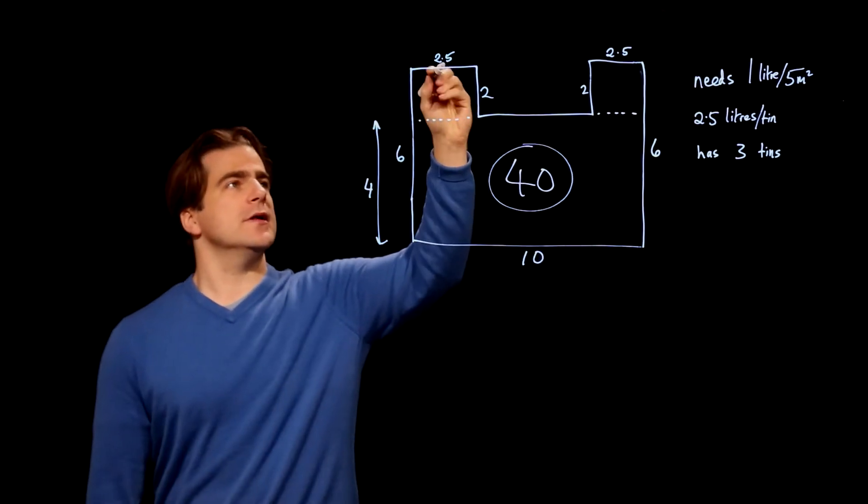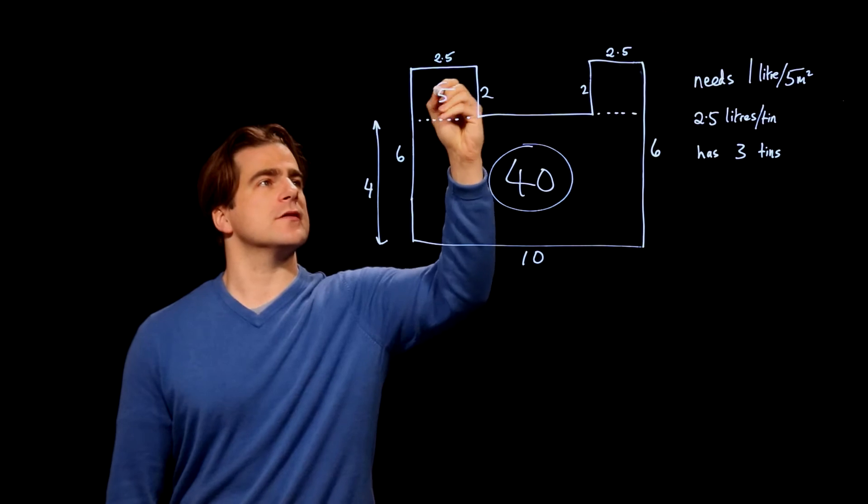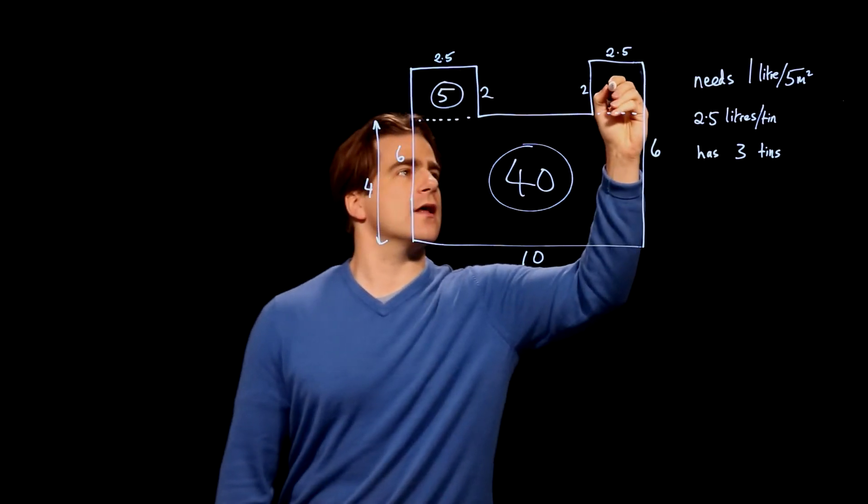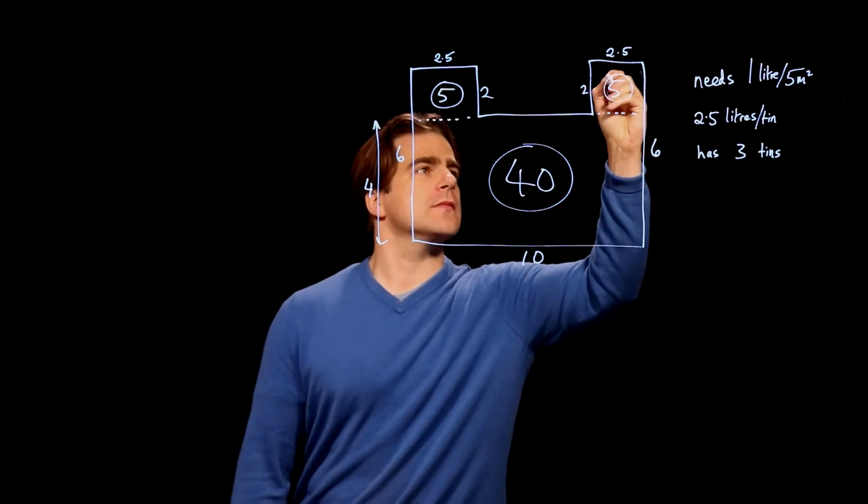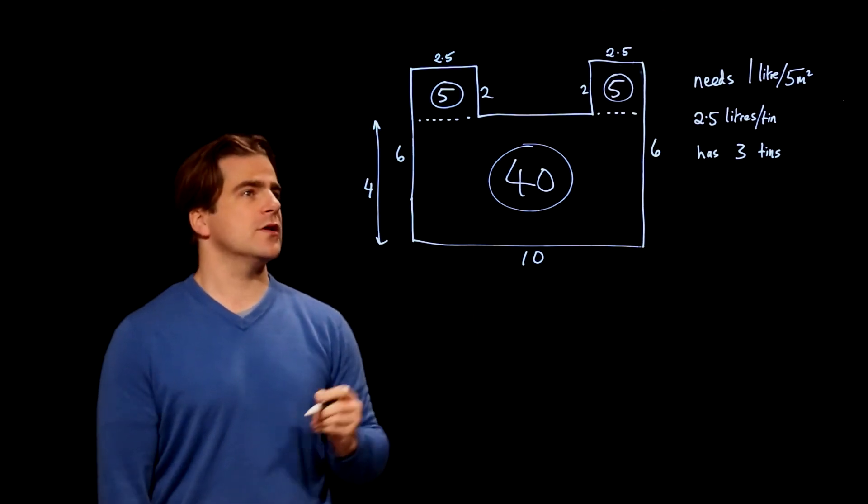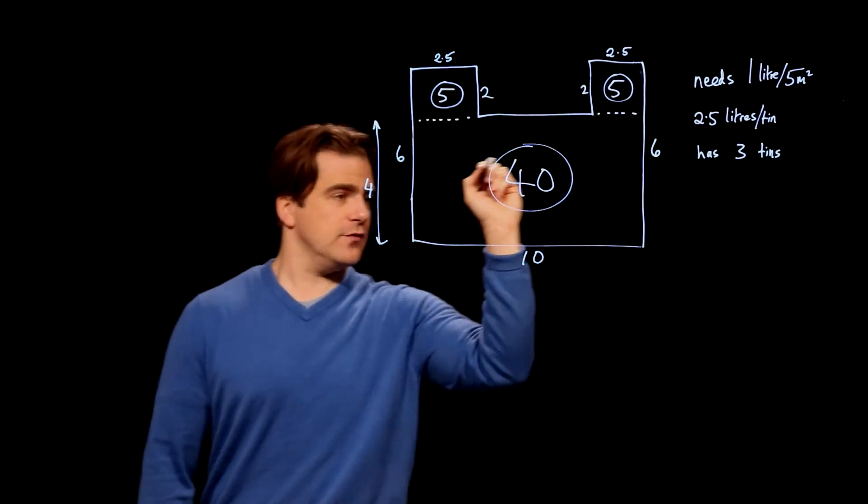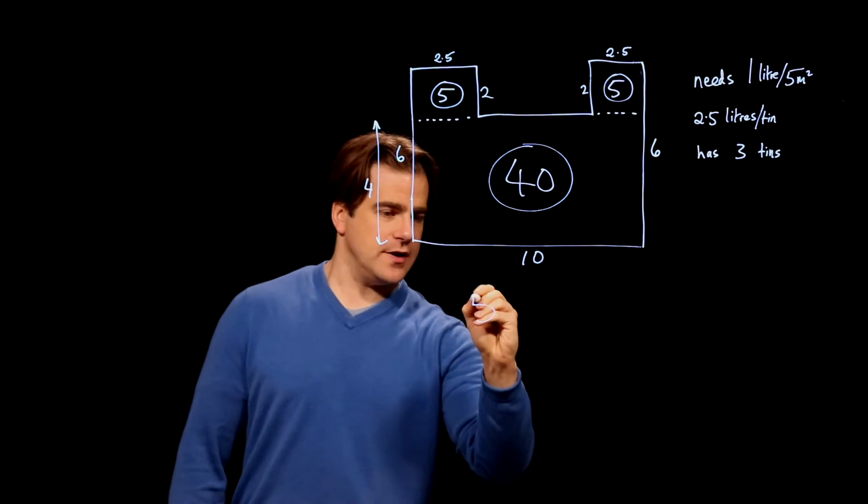And this bit, 2.5 times 2, that's 5 metres squared. And so is that. So we've got a total area of 5 plus 5 plus 40, 50 metres squared.